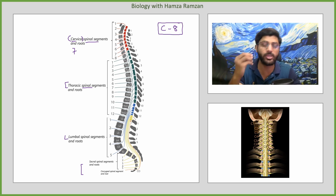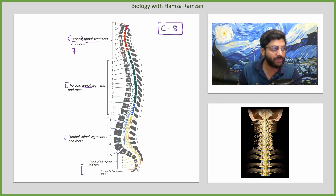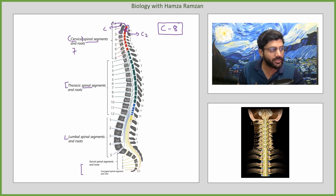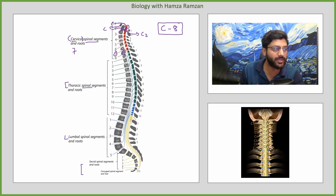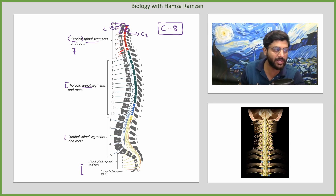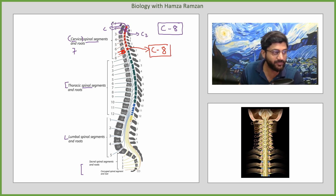This is a little unique thing to understand. The first nerve C1 exits above the C1 vertebra, C2 exits above C2, and similarly up to C7. There is a transition here — the C8 nerve exits below the C7 vertebra, entering into the thoracic region. This is why there are 8 cervical nerves but only 7 cervical vertebrae.